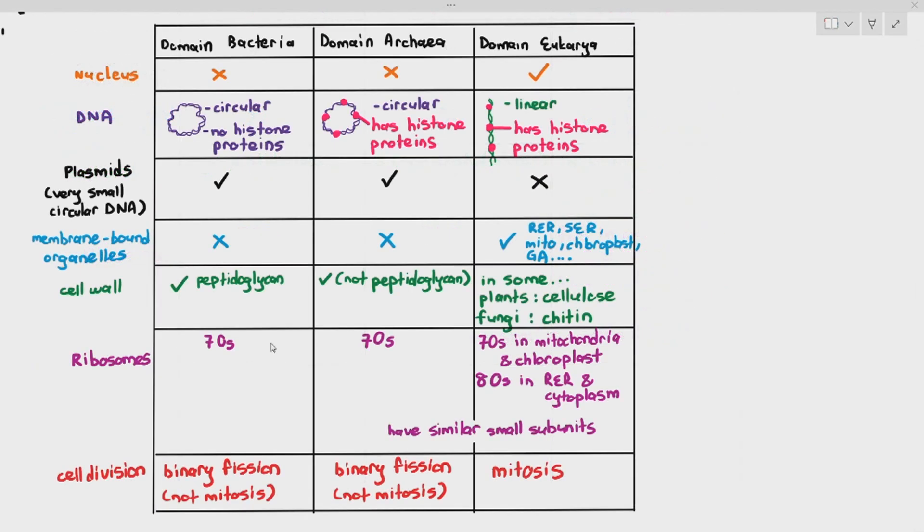Next, cell division. How do they divide? Because bacteria and archaea do not have a nucleus, they cannot do mitosis. Mitosis is only for cells with nuclei or nucleus. So they divide through a process known as binary fission, but eukarya, domain eukarya cells will divide by mitosis. So this is what we have to understand in terms of the comparison for the three domains.